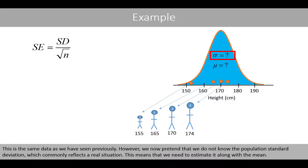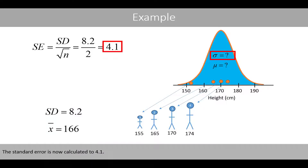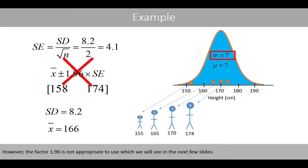This is the same data as we have seen previously. However, we now pretend that we do not know the population standard deviation, which commonly reflects a real situation. This means that we need to estimate it along with the mean. We estimate the mean to 166 and the standard deviation to 8.2. Remember that in the previous example we used the known standard deviation of 10, whereas the standard deviation is here estimated to 8.2. The standard error is now calculated to 4.1, and if we multiply the standard error by 1.96 to generate the 95% confidence interval, we see that the interval goes from approximately 158 to 174. However, the factor 1.96 is not appropriate to use, which we will see in the next few slides.